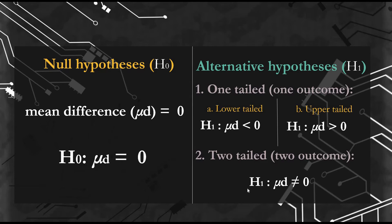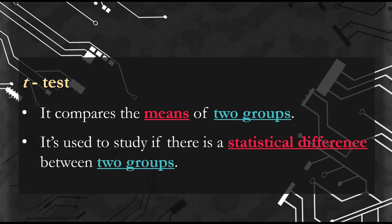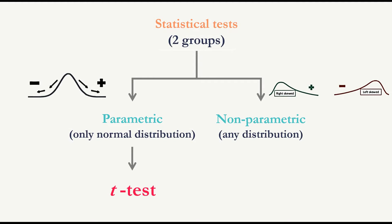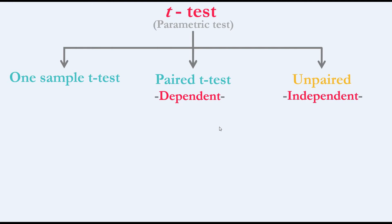Now we move to the t-test. The t-test compares the means of two groups and is used to study if there is a statistical difference between them. In statistical testing, if we have two groups it can be either parametric or non-parametric according to data distribution. The t-test falls under parametric tests, meaning it only applies if the data is normally distributed. The simplest t-test is the one sample t-test, used when you have one sample and want to compare it to a known mean. If your groups are dependent, you use the paired t-test, also called dependent t-test, and if completely independent, the unpaired t-test, also called independent t-test.